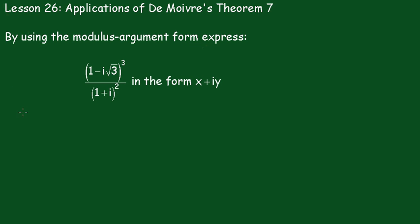we'll let z1 equal 1 minus i root 3. And we'll put that into the mod arg form. So over here I've got a 1 here. Then we go down to a root 3 here.